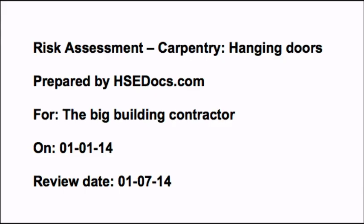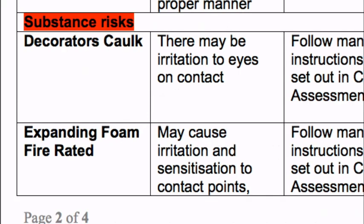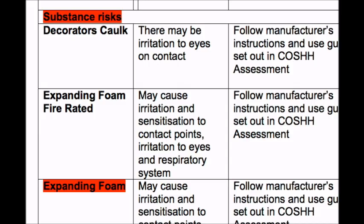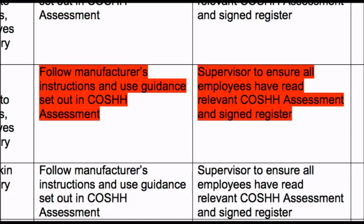The first section of this form was the contract details, the second section was the physical risks, and now as we move down the form we come to the substance risks. In this section we identify the potential hazards that may arise from coming into contact with substances required to complete the task. If we scroll down the first column to expanding foam, you will see that the second column tells us the risks, and the third and fourth columns tell us to follow the manufacturer's instructions and to read the COSHH assessment prior to use. In most cases of substance risk, columns 3 and 4 will state the same thing — of course, you will need to have a COSHH assessment for each substance.